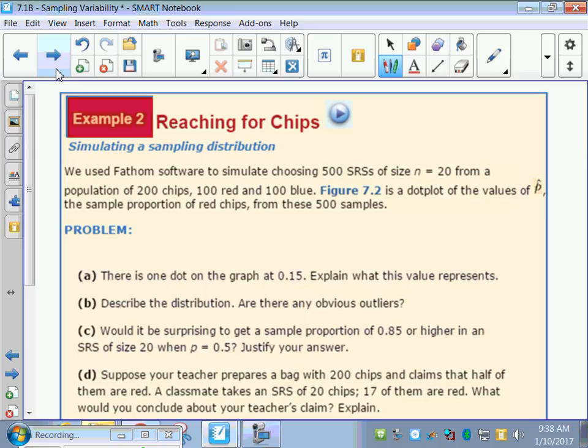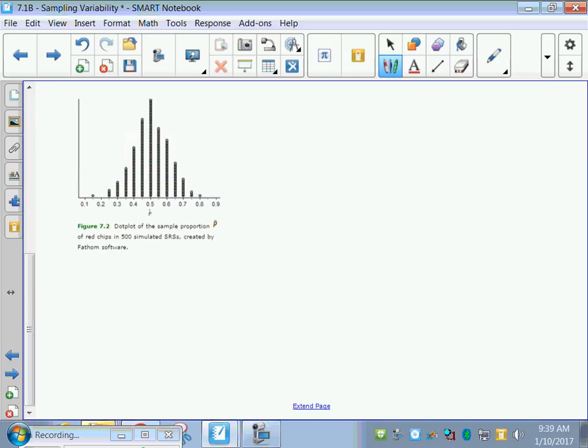Simulating a sampling distribution. We may not be able to get all 20 different ways that we could choose 20 from 200. So if we use some software to simulate choosing 500 simple random samples, instead of 36 of them, now we have software that can actually find 500 for us. 500 different ways we're taking a simple random sample of size 20 from a bag of 200 chips where 100 are red and 100 are blue. And we've got a dot plot from all 500 samples. So instead of 35, now we did it 500 times.